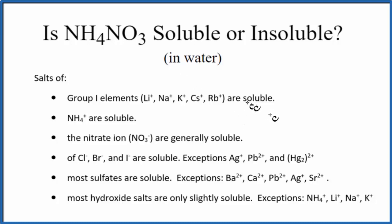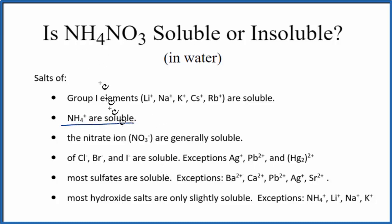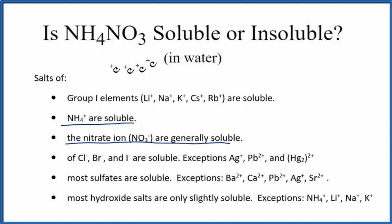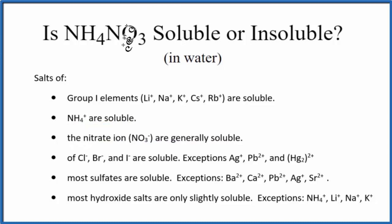First, we could look at the solubility rules. Here is a list of the most important solubility rules. We look for NH4 — there it is — so if we have NH4 in a compound it's going to be soluble. Not only that, here's the nitrate ion, we also have that as well, so this is going to be a soluble compound.